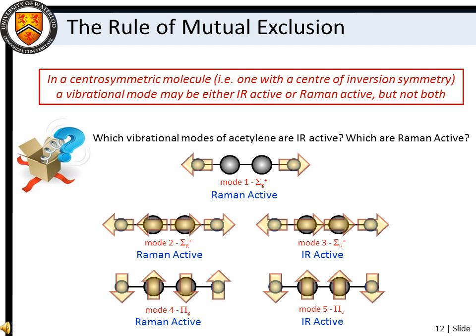In cases where the molecule has a center of inversion, we can apply the rule of mutual exclusion to predict Raman and IR activity. The rule of mutual exclusion states that for centrosymmetric molecules, a vibrational mode must be either Raman or IR active, not both.